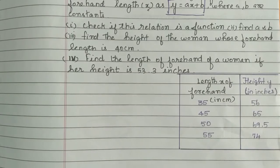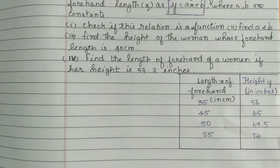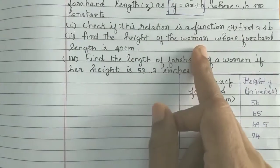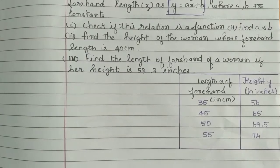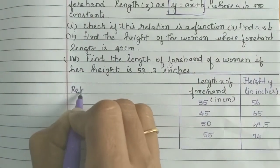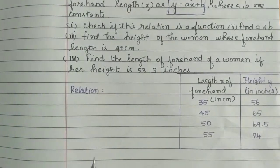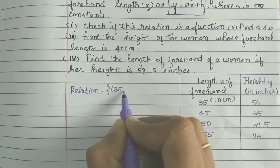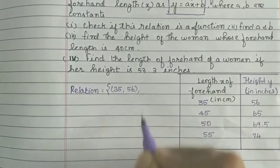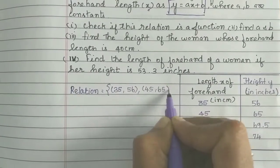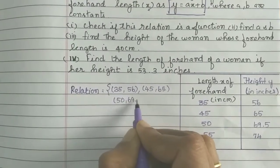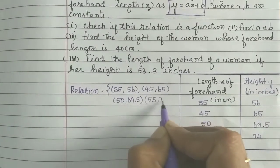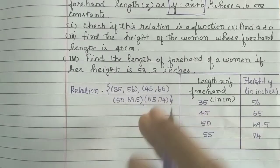Given the relation y = ax + b, we can write the ordered pairs from the table: (35, 56), (45, 65), (50, 69.5), and (55, 74). Now the first question is to check if this relation is a function. The ordered pairs show each input maps to exactly one output, so the relation is a function.